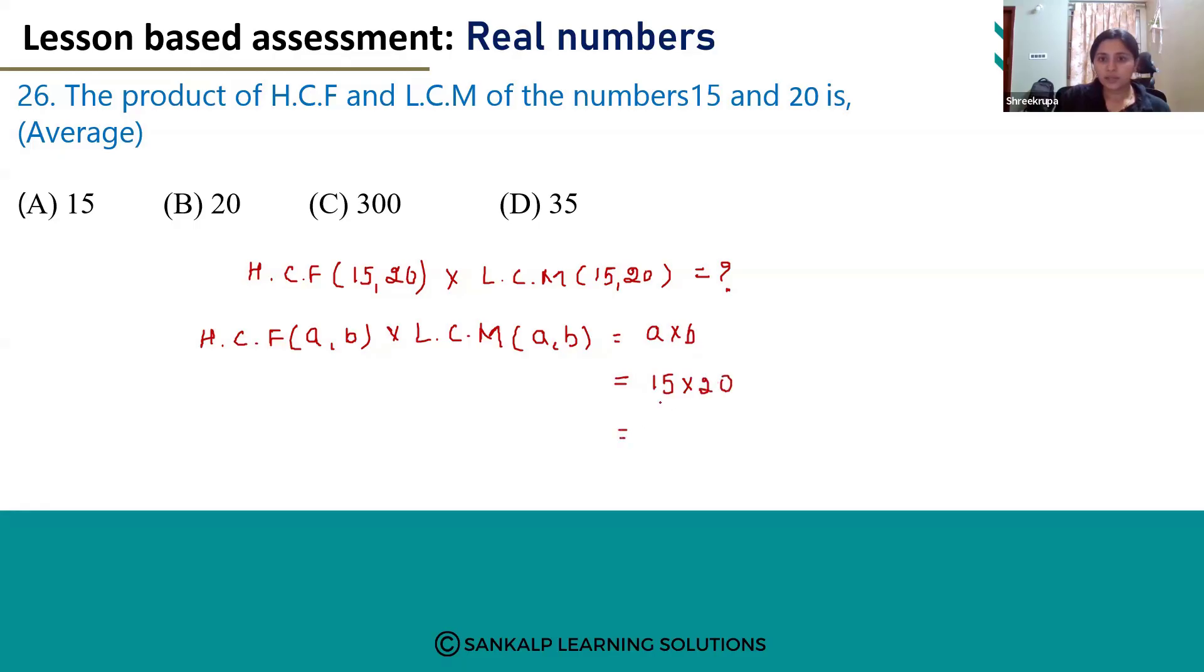We will get 15 twos are 30. One more zero is there, so we have to add another zero here. The product will become 300.